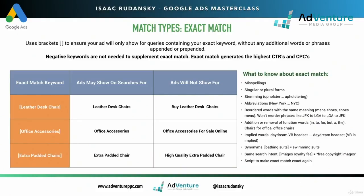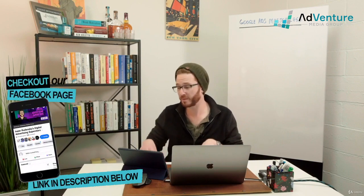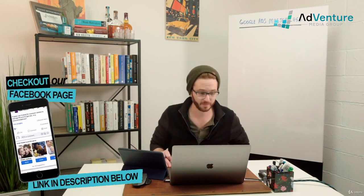Exact match generates the highest click-through rates and also the most expensive CPCs. Higher click-through rates typically leads to a higher quality score. CPCs are higher because exact match keywords are typically my best keywords — the ones most competitors really want to get on top of. So like 'buy leather office chairs online' — anyone selling office chairs online wants that keyword and will bid more aggressively on that exact version of it.